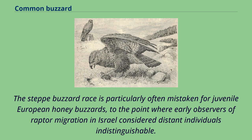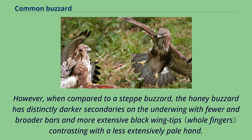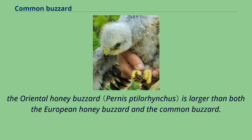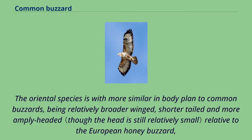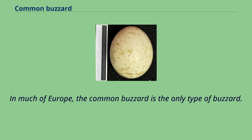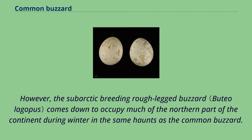When compared to a steppe buzzard, the honey buzzard has distinctly darker secondaries on the underwing with fewer and broader bars and more extensive black wingtips contrasting with a less extensively pale hand. The oriental honey buzzard is larger than both the European honey buzzard and the common buzzard, being relatively broader-winged, shorter-tailed and more aptly headed, but all plumages lack carpal patches. In much of Europe, the common buzzard is the only type of buzzard. However, the sub-arctic breeding rough-legged buzzard comes down to occupy much of the northern part of the continent during winter. The rough-legged buzzard is typically larger and distinctly longer-winged with feathered legs, as well as having a white-based tail with a broad subterminal band. Rough-legged buzzards have slower wing beats and hover far more frequently than do common buzzards.